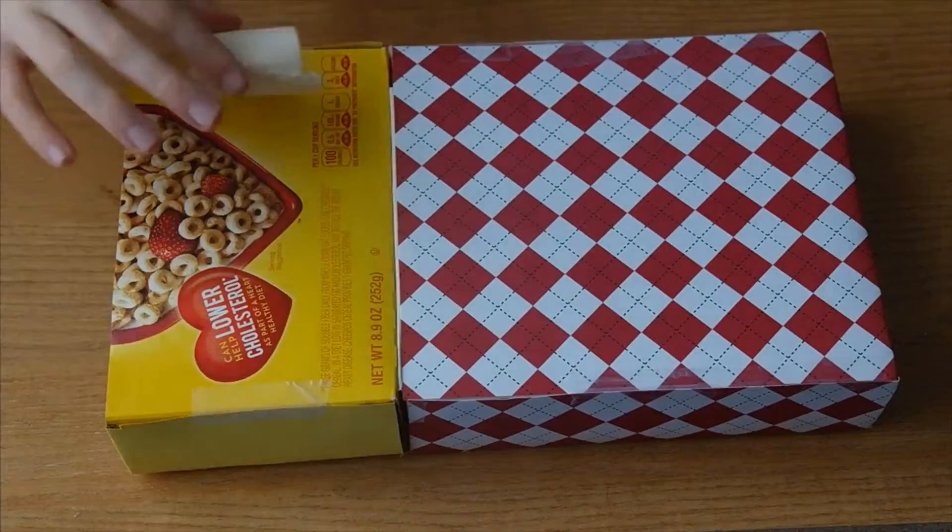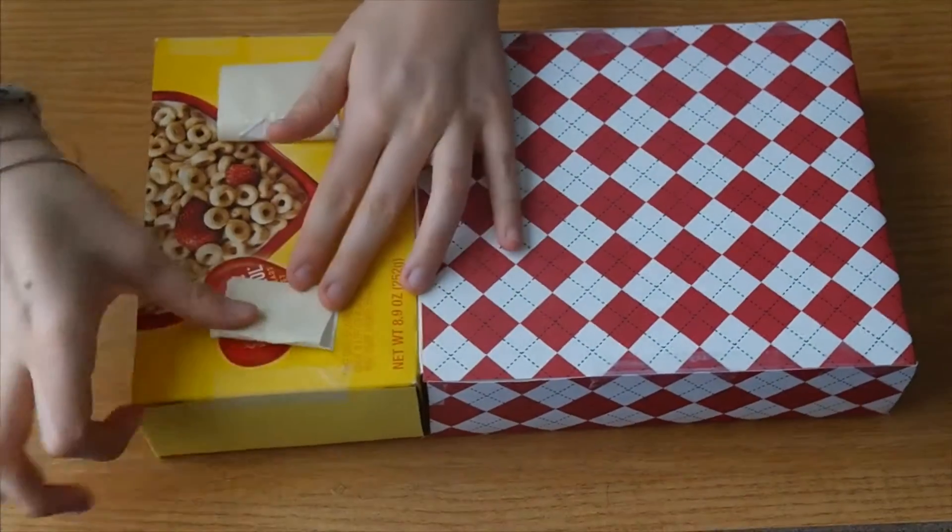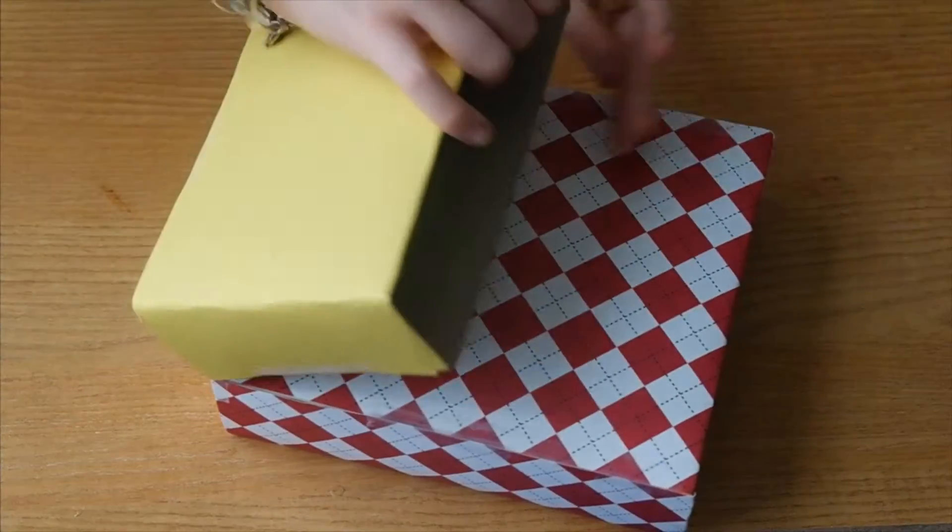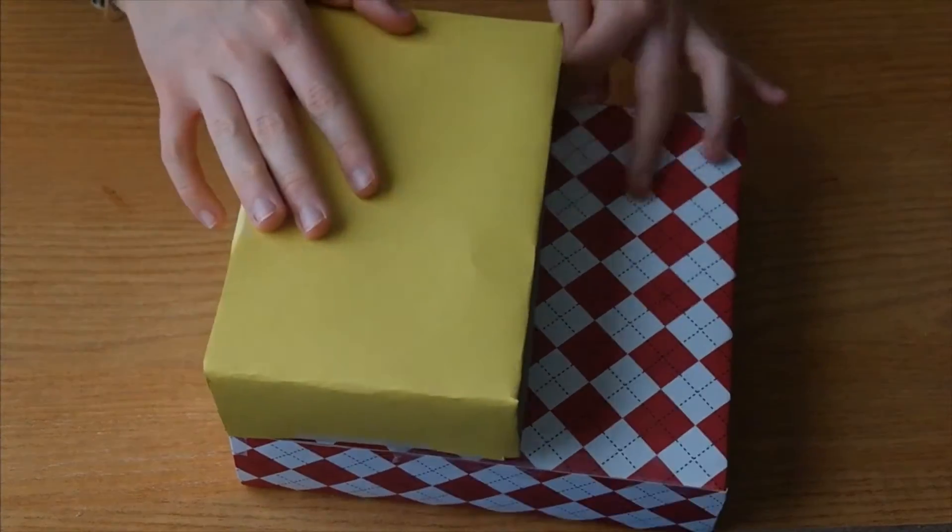Then I rolled up some duct tape and taped the boxes together on the front of my big red box and back of my smaller yellow box. You can also use glue if you'd like.